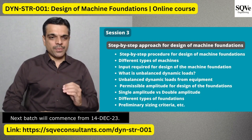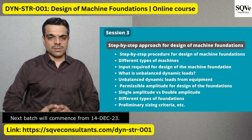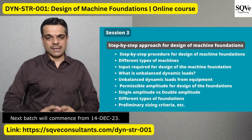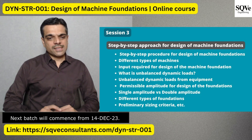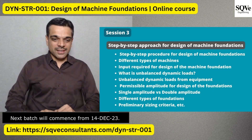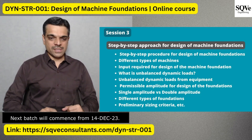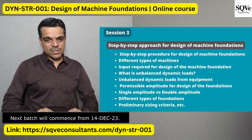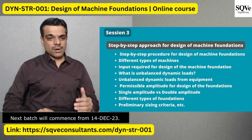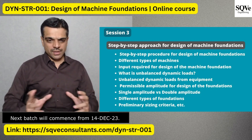Then we'll talk about a step-by-step approach for design of machine foundations, including different types of machines like rotary machines and reciprocating machines, the general inputs required from the manufacturer, unbalanced dynamic loads, and how these loads are generated from rotary and reciprocating equipment. We'll also cover permissible amplitudes — terms like single amplitude, peak amplitude, and double amplitude — which are very important.